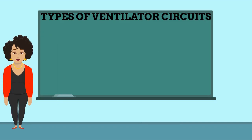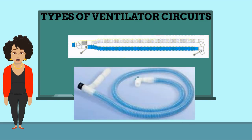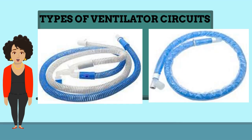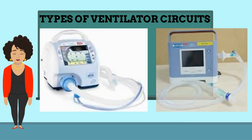Ventilator circuits are double or single limb. Both circuits can have a water trap. Double limb can have a water trap on one or both tubings. They can both have heated wire, and single limb can have an active or passive tubing.